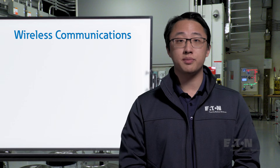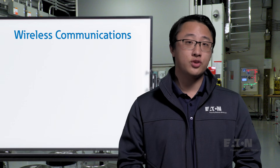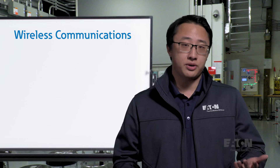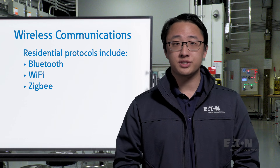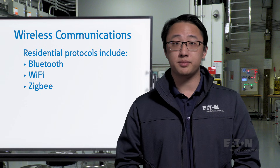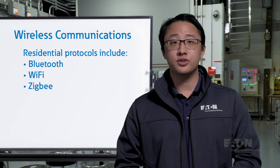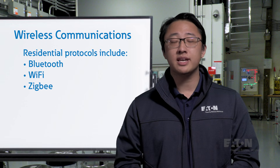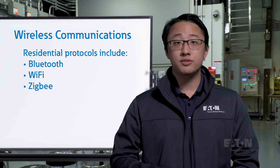Finally, we have wireless communication, which can take the form of any transmitter and receiver, like cellular, satellite, etc. Many residentially familiar protocols exist, like Bluetooth, Wi-Fi, and Zigbee. However, there's been difficulty adapting them to industrial use, where speed, precision, and reliability cannot be compromised. There are many different options, but they'll almost always be limited to lower-power, less critical applications.